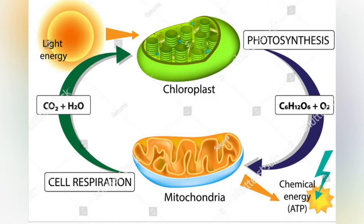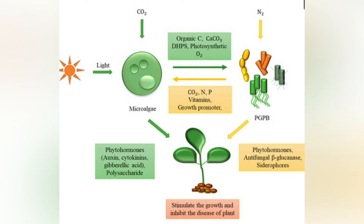the peak absorption wavelengths of chlorophyll A are 430 nm and 664 nm; peaks for chlorophyll B are 460 nm and 647 nm; peaks for chlorophyll C1 are 442 nm and 630 nm; peaks for chlorophyll C2 are 444 nm and 630 nm; peaks for chlorophyll D are 401 nm, 455 nm, and 696 nm. Ratio fluorescence emission can be used to measure chlorophyll content.